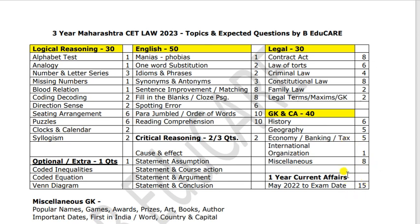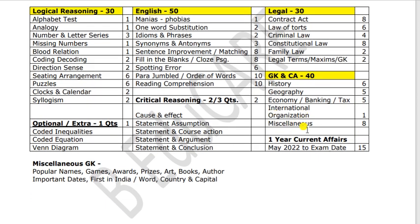Miscellaneous GK mein hum kya padhen, yeh kaafi saare students ke mann mein sawaal hota hai. Ismein aata kya kya hai: popular names, games related cheezein, trophies related cheezein, awards, prizes, arts and culture, books, author kaun tha, important dates, first in India, first in world, country capitals. Toh humari jo GK ki book hai, uske andar nadiyon ke naam, bahut saari cheezein hain.